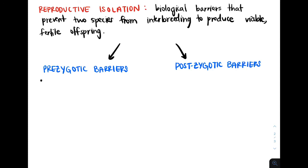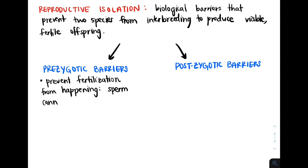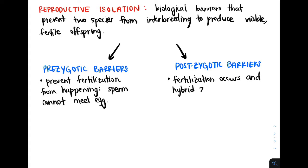Prezygotic barriers prevent fertilization from even happening, meaning that sperm cannot even meet the egg, so no zygote forms — this all occurs before the zygote. Postzygotic barriers, on the other hand, occur after fertilization has occurred. This means that a hybrid zygote does form, but it has reduced fertility or reduced viability and is therefore selected against.